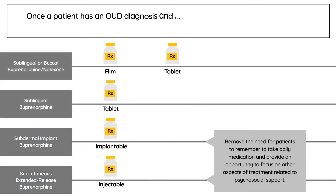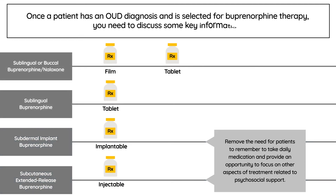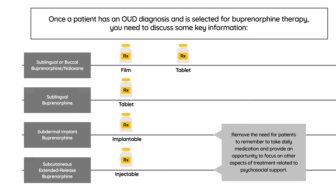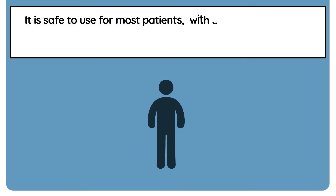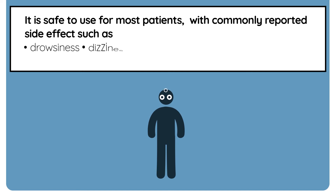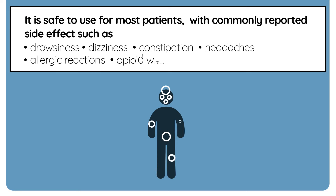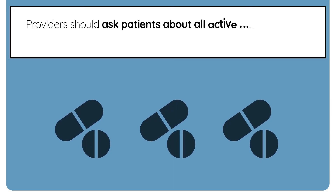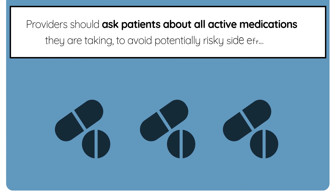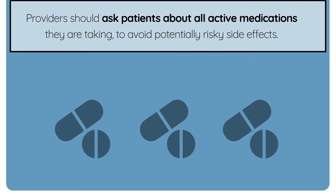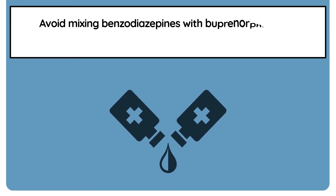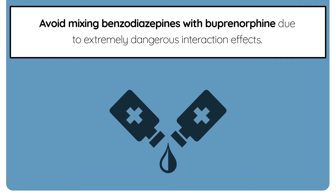Once a patient has an OUD diagnosis and is selected for buprenorphine therapy, you need to discuss some key information. It's important to mention the possible side effects of buprenorphine. It is safe to use for most patients, with commonly reported side effects such as drowsiness, dizziness, constipation, or headache. Rare side effects include allergic reactions, opioid withdrawal symptoms such as insomnia and irritability, and liver damage. Providers should ask patients about all active medications they are taking to avoid potentially risky side effects. Patients also need to know that they should avoid mixing benzodiazepines with buprenorphine due to extremely dangerous interaction effects.